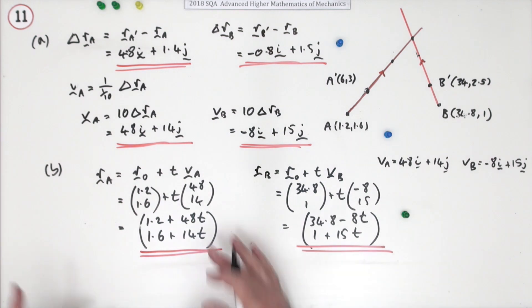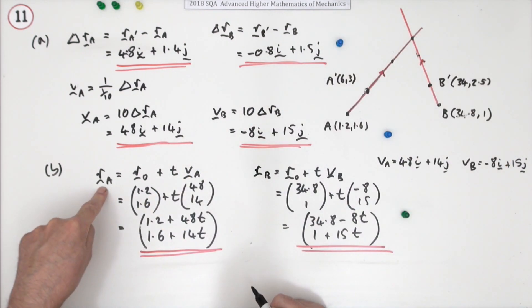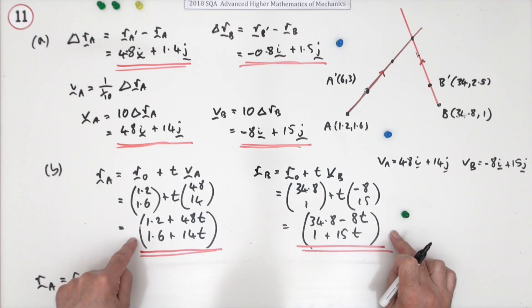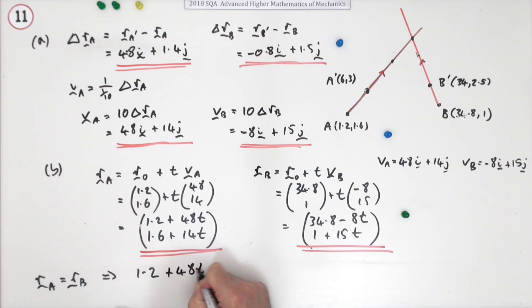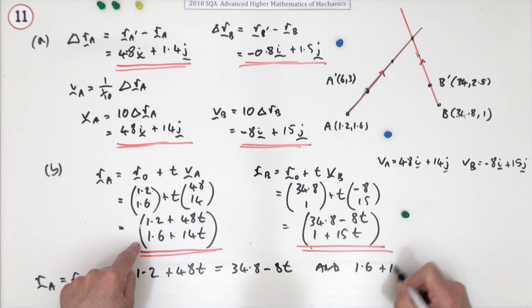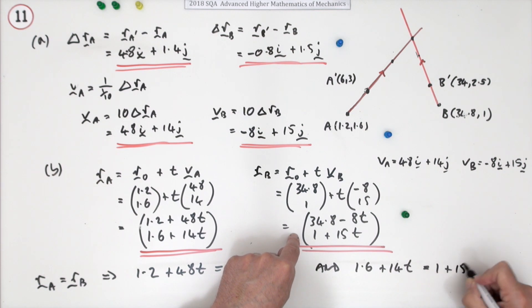So what's the condition for them to collide? They'd have to get to the same point. The position r_A would be the same as the position r_B. They'd be at the same place, and for these two vectors to be the same it means all their bits must be the same. So taking the x components, that means that 1.2 + 48t must be the same as 34.8 - 8t, and at the same time these have to be the same: 1.6 + 14t should have to equal 1 + 15t. So it's just a case of solving them and seeing if you get the same value of t for both, so they're at the same place at the same time.